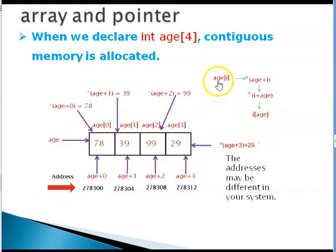Whether you write age[i] or i[age] internally both are the same because the moment you say age[i], C compiler internally converts it to star age plus i.